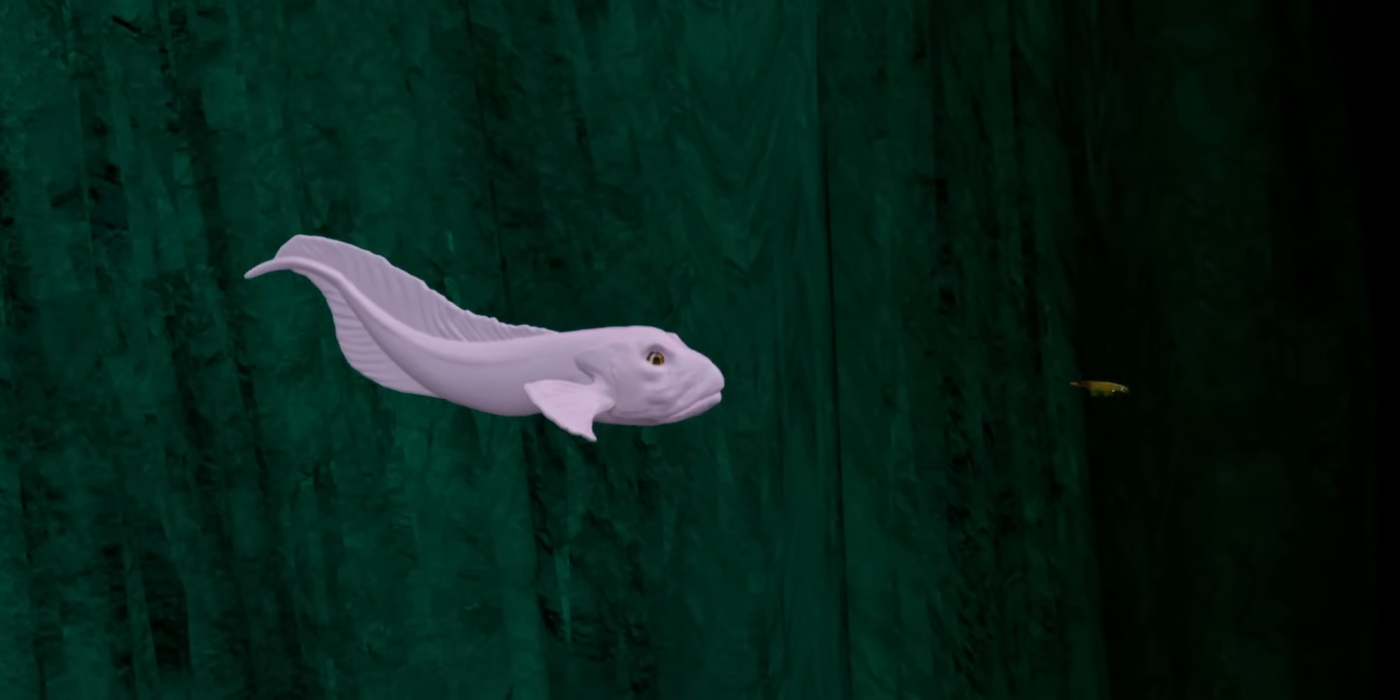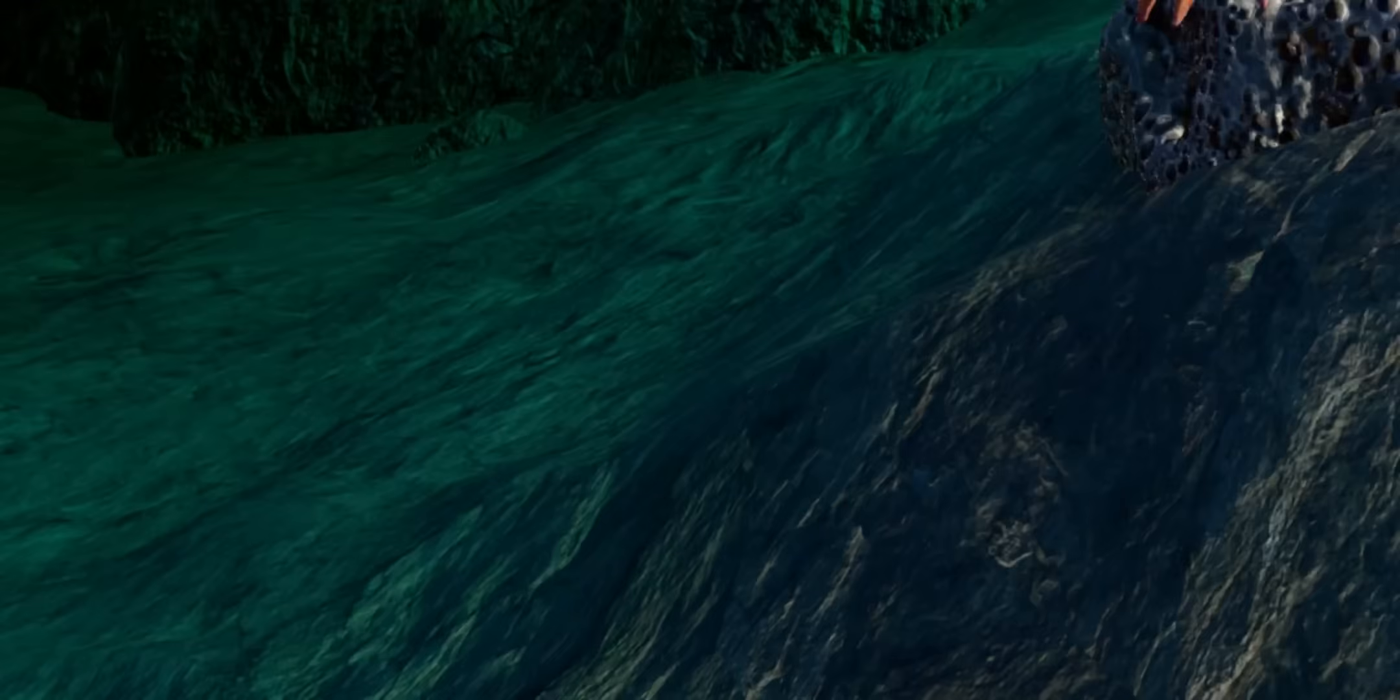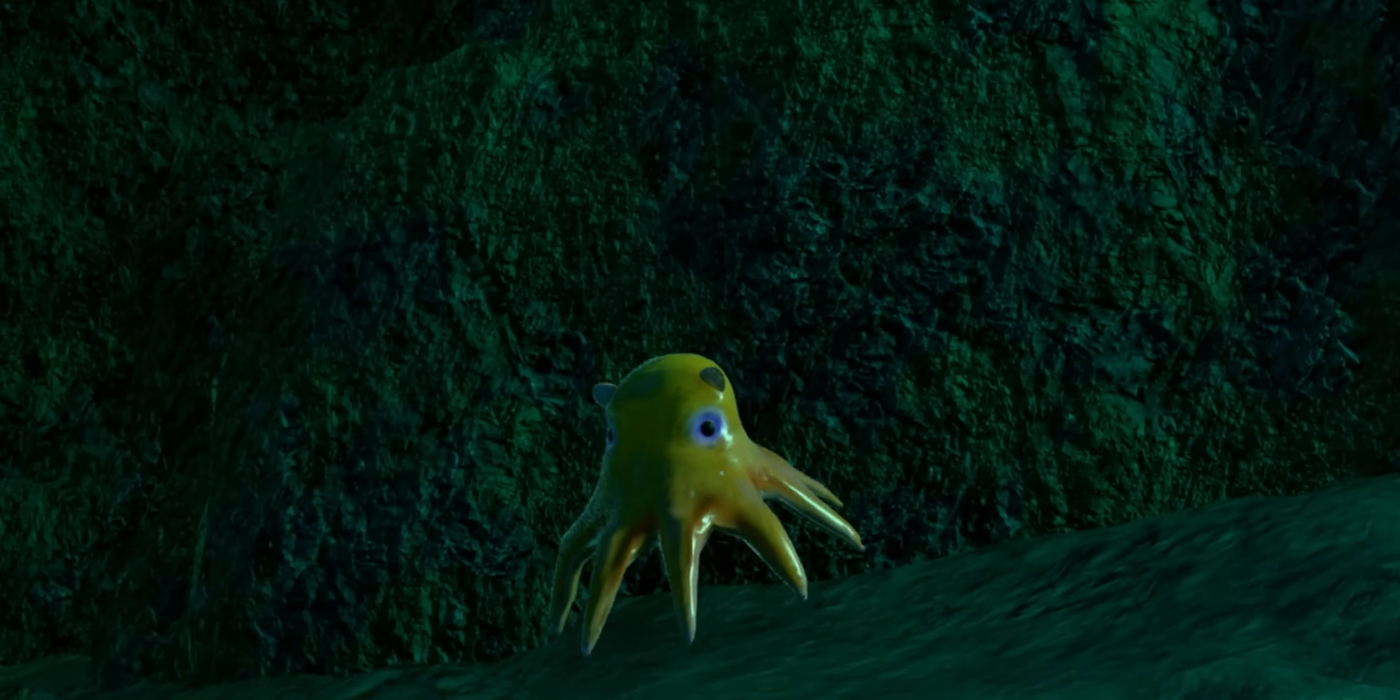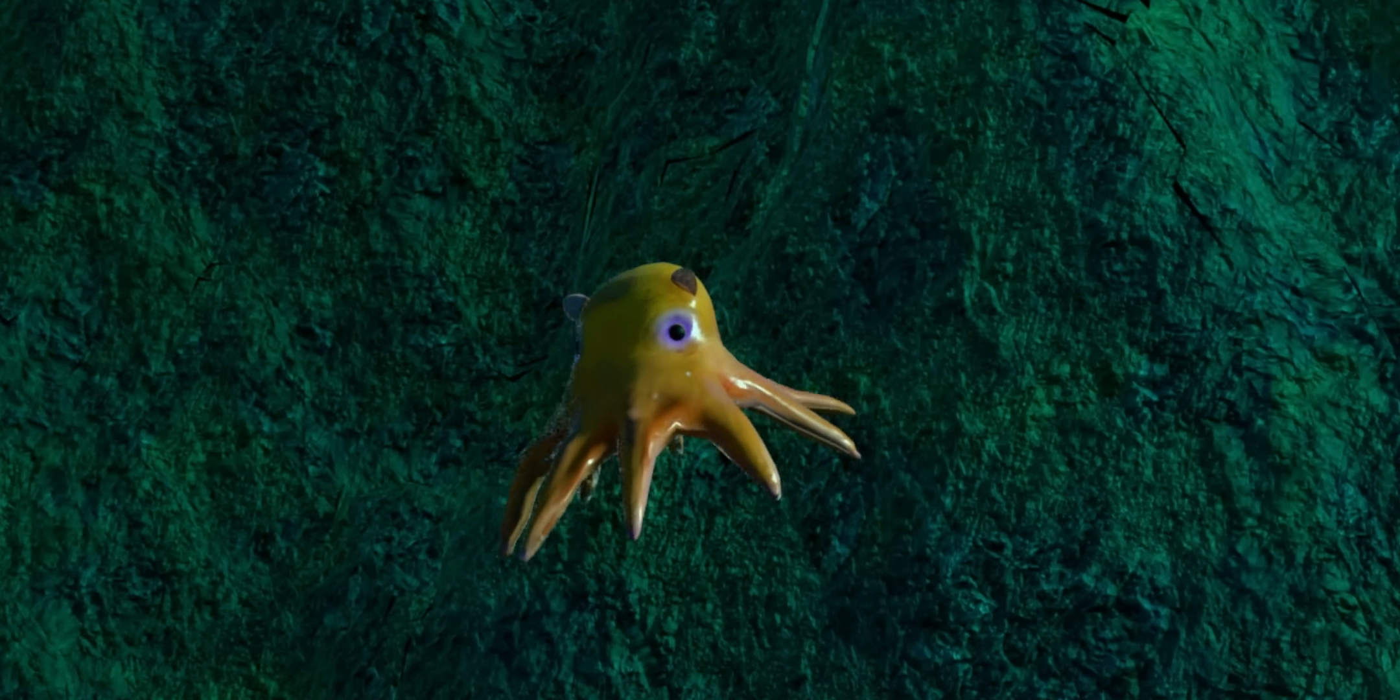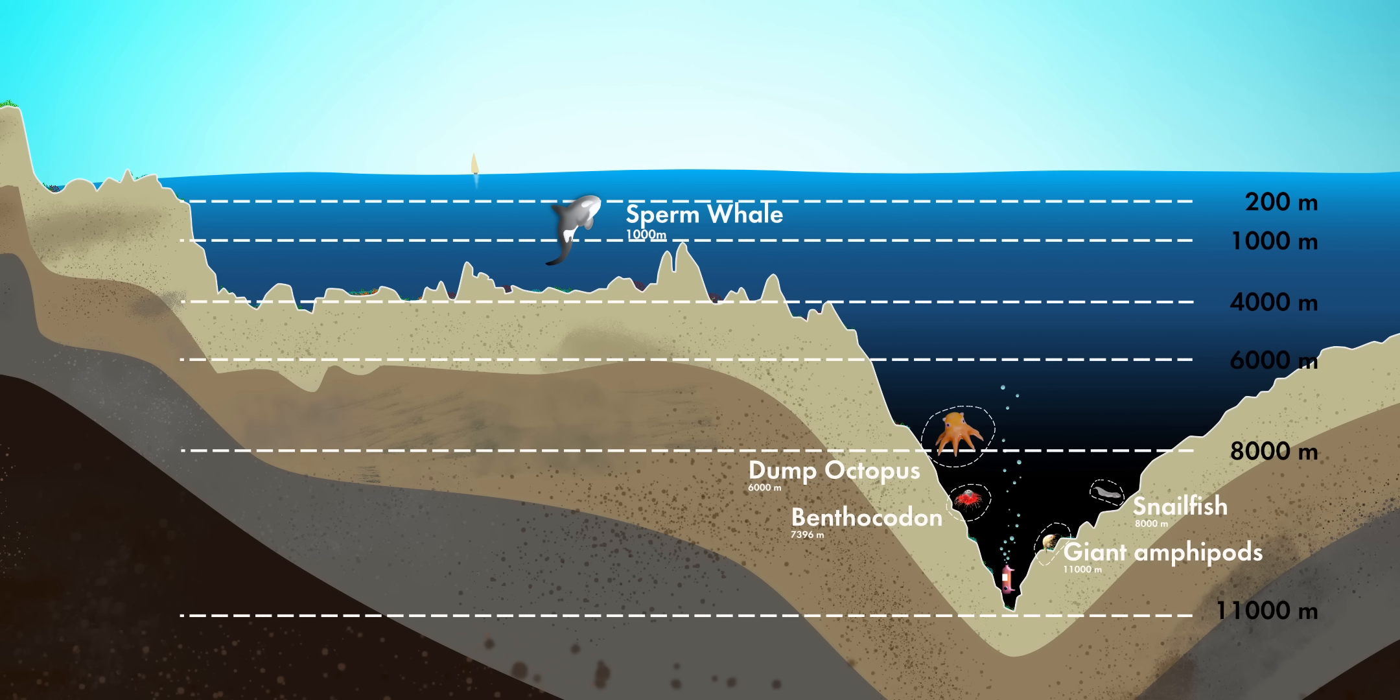The Mariana snailfish feed on tiny shrimp-like crustaceans. There are more interesting creatures in this zone. Have a look at the Dumbo octopus. The other interesting creatures in the trench are the giant amphipods and benthocodon. This image illustrates different creatures living in the Mariana Trench with depth.